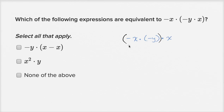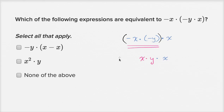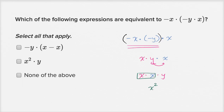So this is going to be the same thing as positive x times positive y, times x again. Negative times a negative is a positive, so you get positive x times y, then multiplied by x again. Multiplication is also commutative, so I can put the x's together and write this as x times x times y, and x times x is x squared. So this is x squared times y, which is exactly what one of the choices shows.